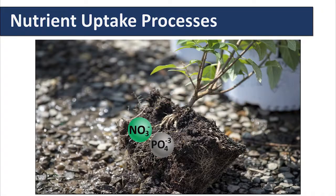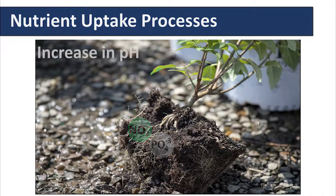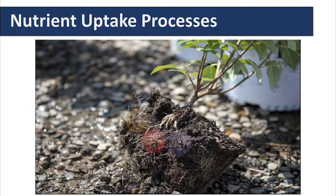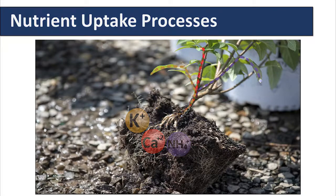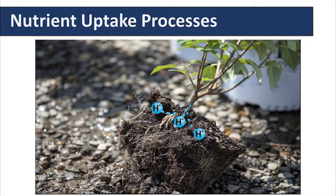Once the nutrient is taken up into the plant, the root system must maintain an ionic balance. When ions like nitrate or phosphate are taken up, hydroxide ions are released from the plant in exchange, creating an increase in pH in the rhizosphere. Other ions such as potassium, calcium, and ammonium, which are positively charged, will result in a release of a hydrogen ion, causing acidification of the root zone.